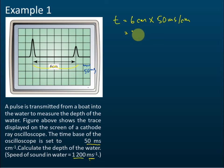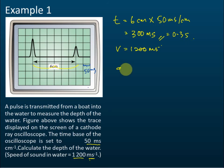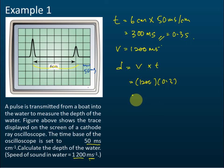The time is 300 milliseconds. The speed of sound is 1200 meters per second, and 300 milliseconds equals 0.3 seconds. Therefore, the distance traveled equals speed multiplied by time: 1200 multiplied by 0.3 equals 360 meters.